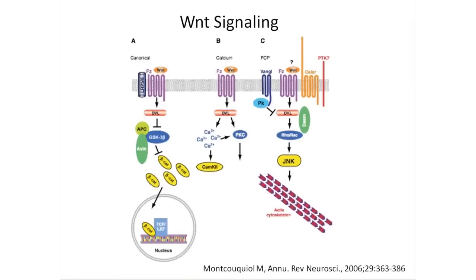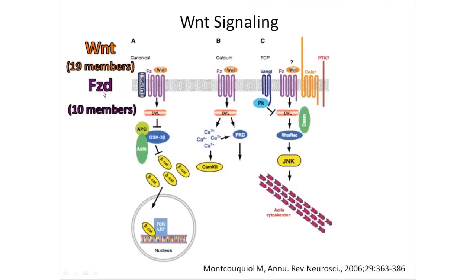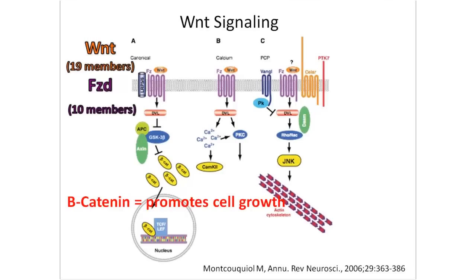My collaborator works on Wnt signaling — one very specific aspect. The traditional canonical Wnt pathway has a variety of Wnt ligands binding to frizzled receptors on the outside of the membrane, eliciting a signaling cascade that results in the upregulation of beta-catenin. This beta-catenin then induces expression of other genes. In the cancer field, this pathway is largely considered pro-oncogenic — elevated beta-catenin levels have been observed in many cell types, and there's been a movement to try to inhibit this pathway in certain cancers.